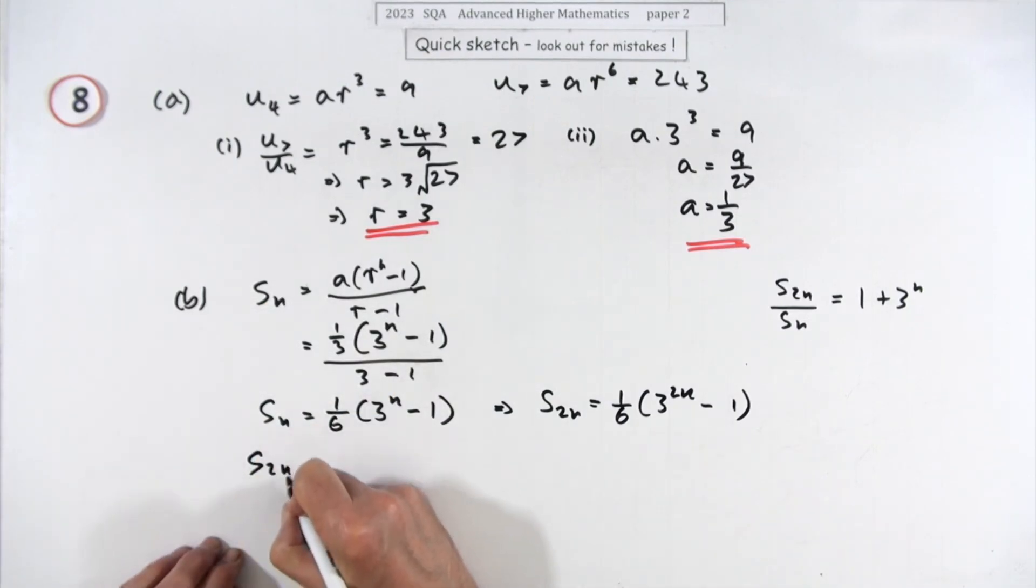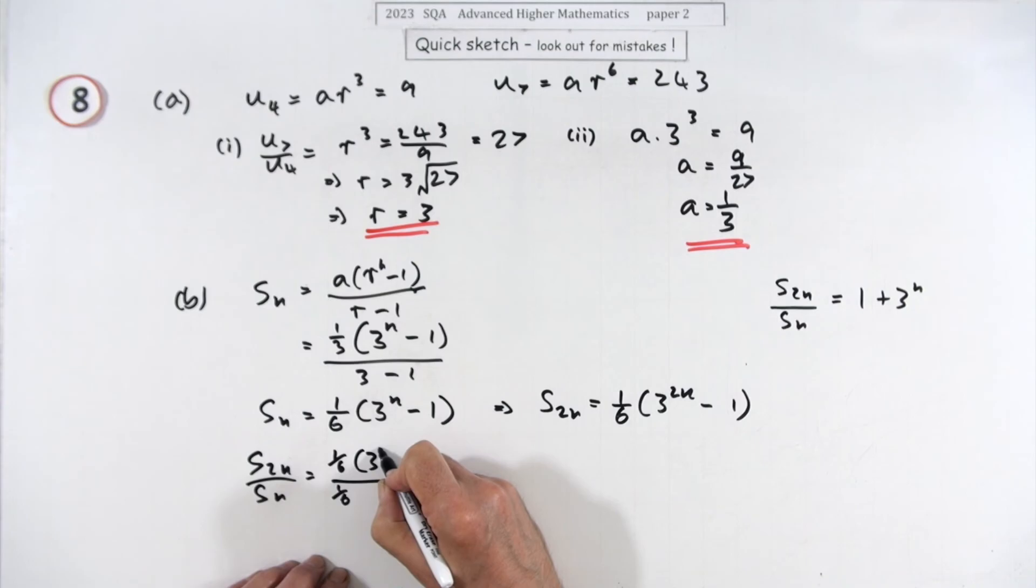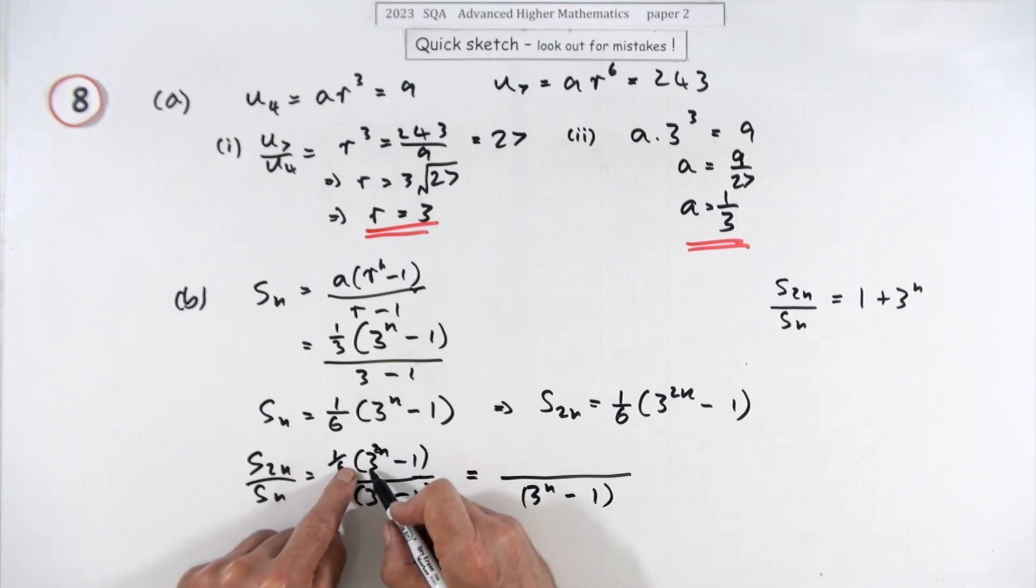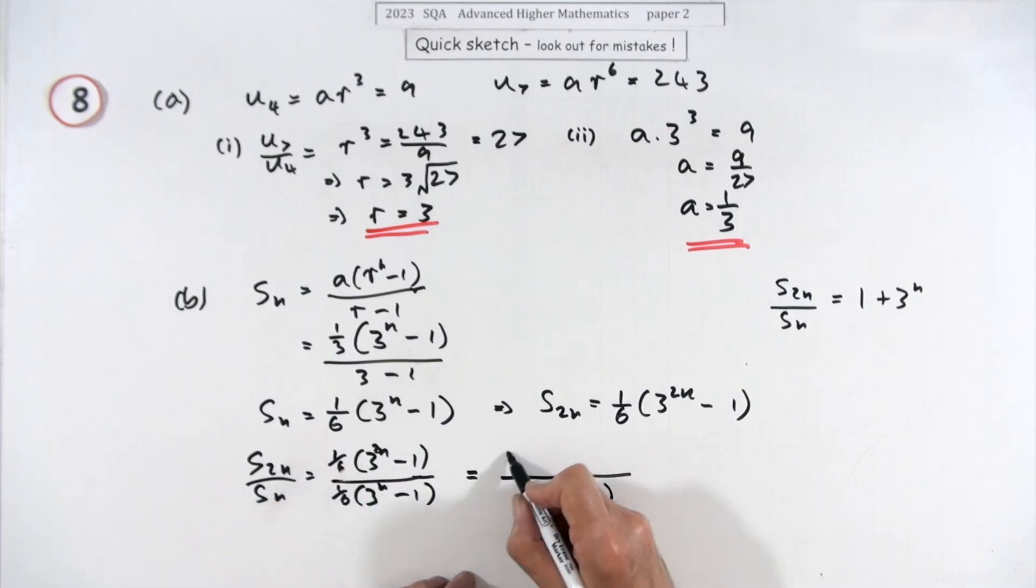So that s of 2n over s of n would be—do I have to show the sixth? Because they're going to—I'll put them in anyway. Of 3 to the n minus 1 over—that's the 2n on top—n minus 1. Now the sixths cancel out, and I'll just multiply that one out. Just keep that in a bracket, because that becomes—that's a square, so you've got a difference of two squares. That's 3n minus 1 times 3 to the n plus 1.